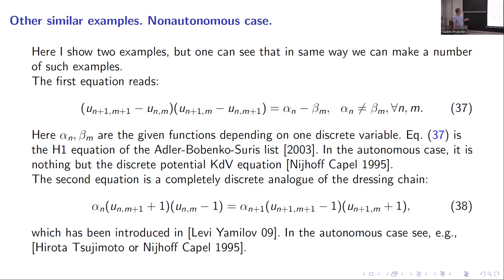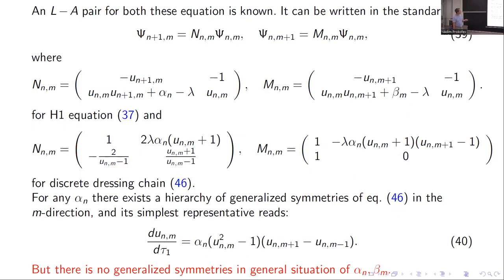So what can we say about these equations? Both these equations have a standard Lax pair: for the first equation the Lax pair exists, for the second equation the Lax pair also exists. And for this recent chain, the post-order symmetry in the m direction exists. But one can say that for both situations, there is no symmetry in the general situation of general alpha n and beta n.